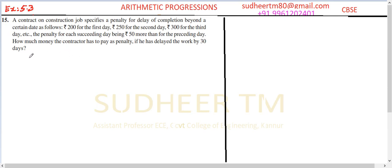So, the first day he is supposed to pay 200, second day 250, third day 300, and on day 30 he is supposed to pay some amount. Our question is to find how much will be the total lump sum amount he has to pay after 30 days.